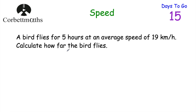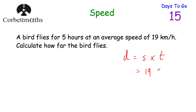Our next question says: a bird flies for 5 hours at an average speed of 19 kilometres per hour. Calculate how far the bird flies. Feel free to press pause now. The bird flies at 19 kilometres per hour — so 19 kilometres every hour — and it travels for 5 hours. So distance equals speed multiplied by time: 19 multiplied by 5 is equal to 95 kilometres. So the bird flew 95 kilometres. Well done if you got that.